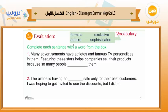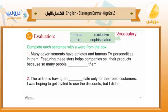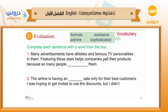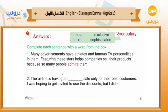Now we will use these four words in the correct sentences. Complete each sentence with a word from the box. Number one: 'Many advertisements have outlets and famous TV personalities in them. Featuring these stars helps companies sell their products because so many people _____ them.' The correct answer is 'admire' — so many people admire them. Number two: 'The airline is having an _____ sale only for their best customers.' Since it is special and only for the best customers, the correct word is 'exclusive.'